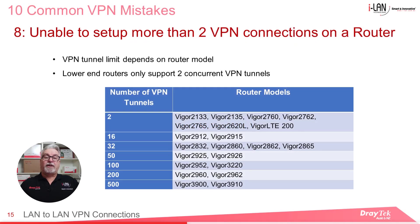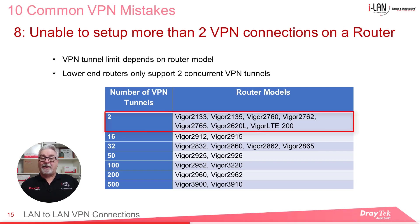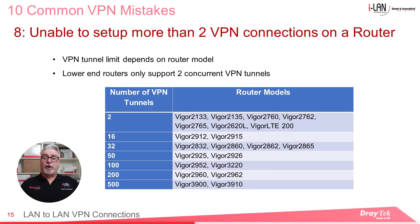The VPN tunnel limit in Draytech routers depends on the router model being used. Routers including the Vigor21xx series, Vigor27xx series, the Vigor2620L and the VigorLTE200 support only two concurrent VPN tunnels. A common mistake is purchasing the wrong router model when more than two concurrent VPN tunnels is required. The table here shows the number of concurrent VPN tunnels that are supported for each router model.